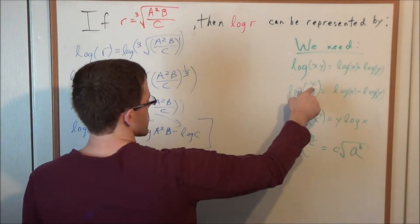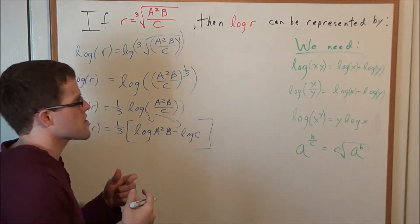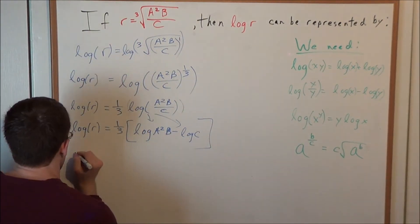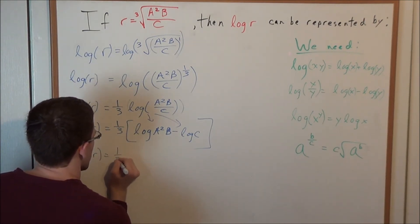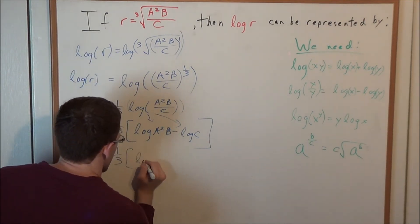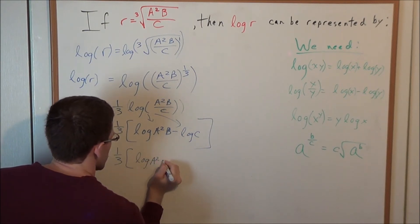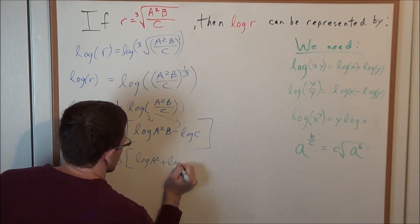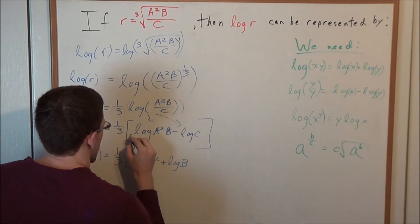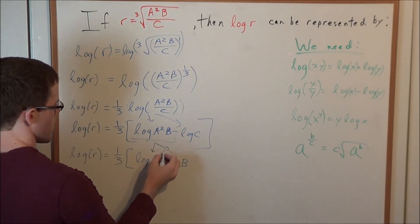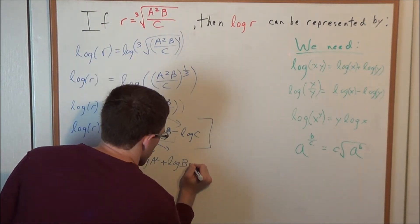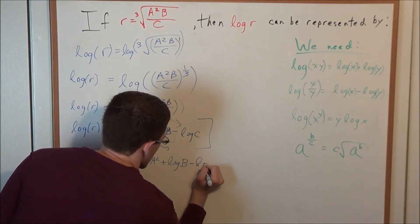And when we have multiplication, remember it's going to be, we could separate it with addition. So now we have that log r is equal to one-third, and we have log of a squared plus log of b. This is how log a squared b expanded. And now we still have that minus log of c.